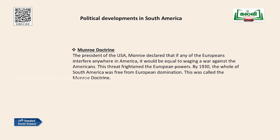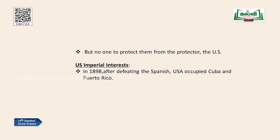Monroe Doctrine: The President of the United States declared that if any Europeans interfered anywhere in America, North or South, it would be equal to waging a war against the Americans. This threat frightened the European powers. By 1930, the whole of South America was free from European domination. This was called the Monroe Doctrine. Even though South America was completely relieved from European nations, there was no one to protect them from the protector — that is, the United States.